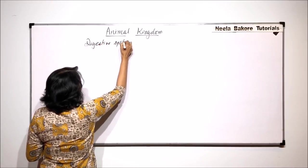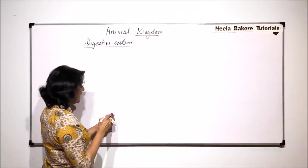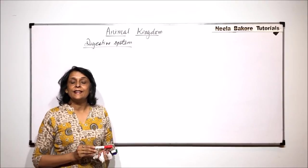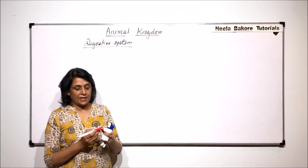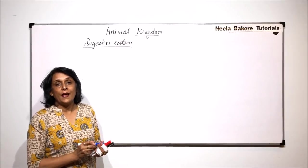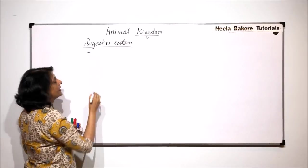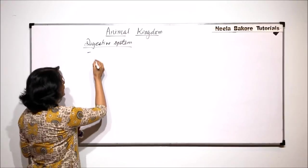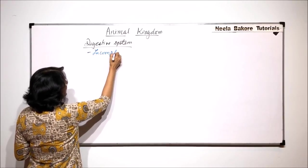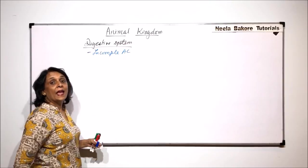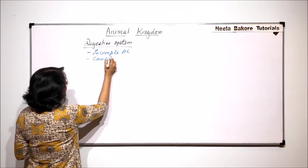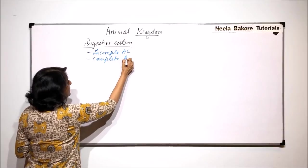When we talk of the digestive system we are talking about ingestion of food, then digestion, absorption, assimilation and all these things. But in case of animals we find that there are two types of systems. One is called the incomplete alimentary canal and the other one is called the complete alimentary canal.